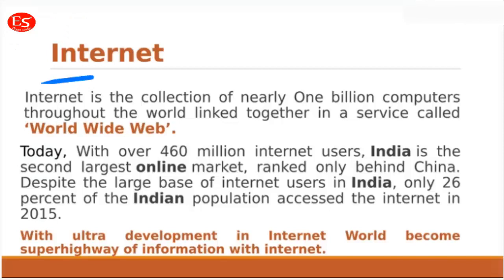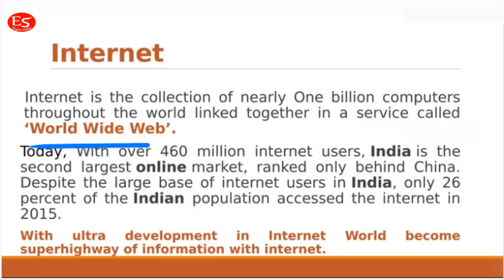In this lesson, firstly we need to understand the concept of internet. Internet is a very common thing these days, but we are not understanding the word 'internet' in a proper way. Internet is simply the collection of computers all around the world linked together through a service called the World Wide Web. Each and every website has a prefix like 'www', which is the abbreviation of World Wide Web. This service interlinks every computer throughout the world into a network, and that network is what we properly understand as the internet.